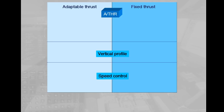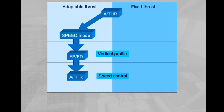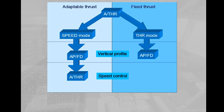The autothrust can work in two different modes. In speed mode, the autothrust continuously adjusts the thrust in order to maintain a target speed or Mach, for example during cruise or approach.